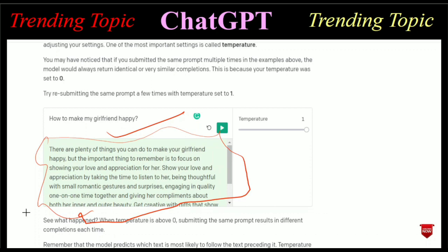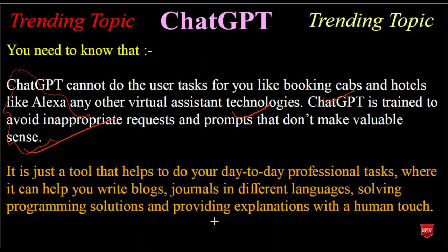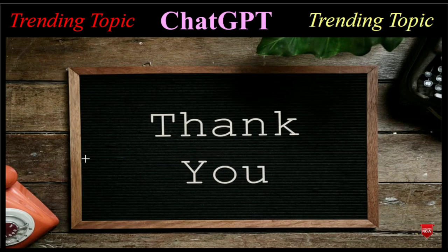That's all about ChatGPT — you can create your account and access it. Later, some things you need to know: ChatGPT can't do tasks for you like booking cabs or hotels the way Alexa and other virtual assistants do. ChatGPT is trained to avoid inappropriate requests. It is a tool that helps with day-to-day professional tasks — writing blogs, journals in different languages, solving programming problems, and providing explanations with a human touch. If you like this video, subscribe to my YouTube channel and press the bell icon. Thank you and goodbye.